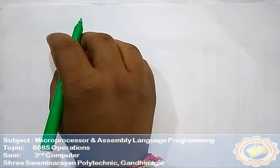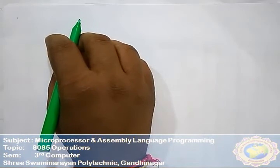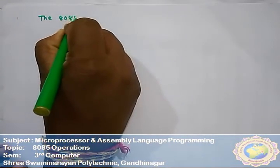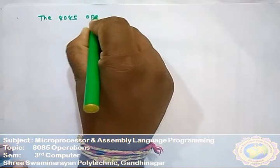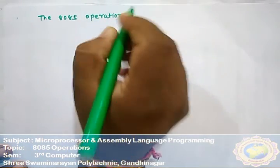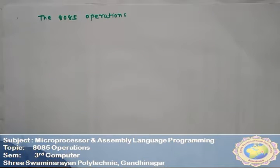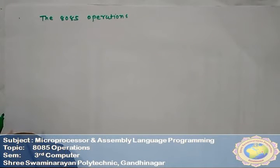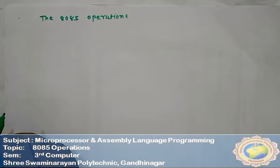This is Amna student. Today we are going to learn about the 8085 operations. In 8085 operations, the microprocessor has a set of a finite number of instructions through which it can manipulate data and communicate with the peripheral devices.